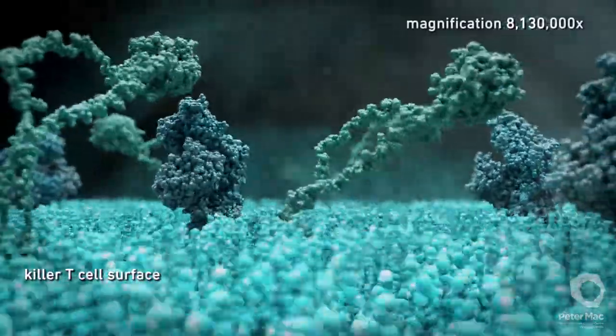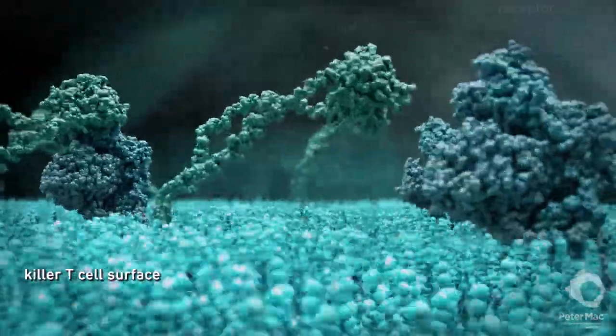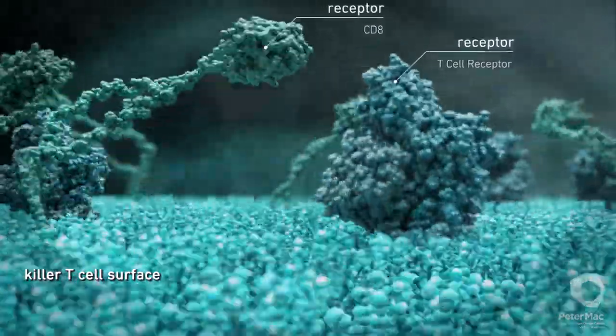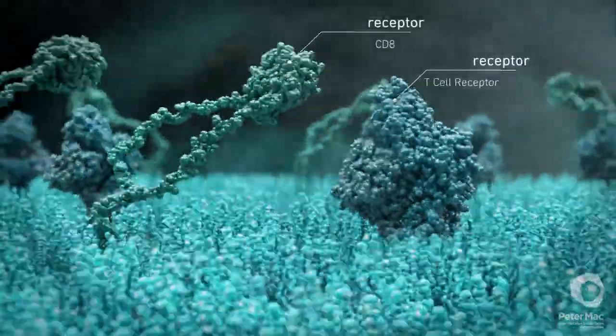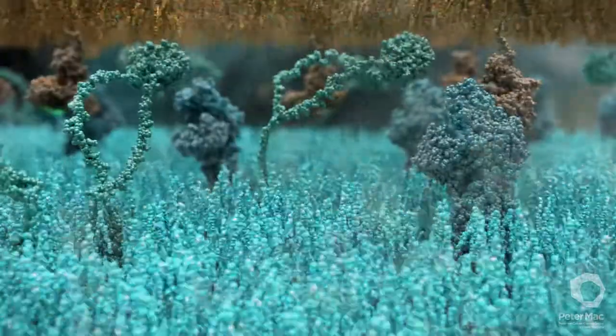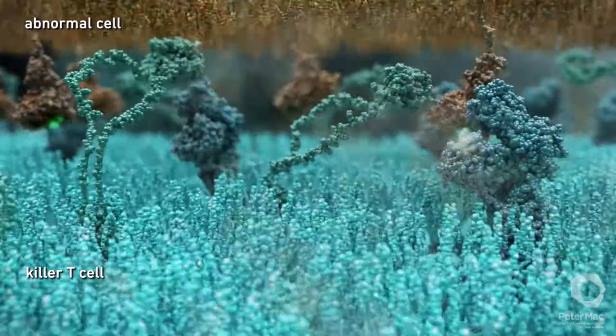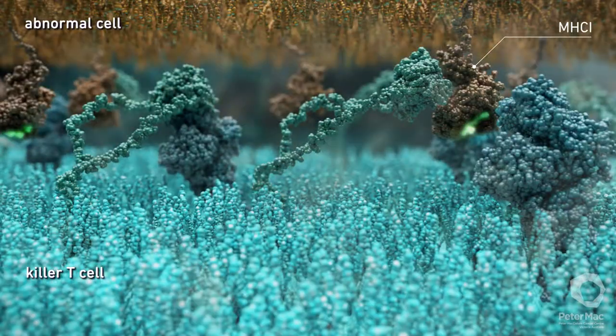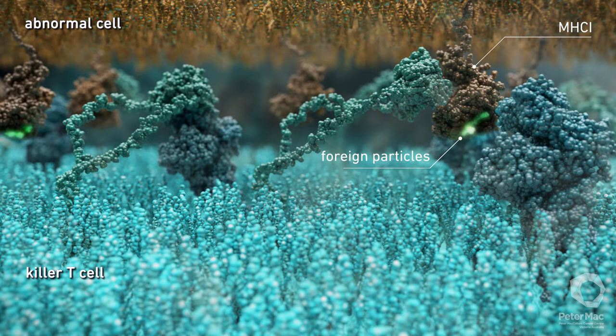We are now looking at the magnified surface of a killer T cell. These cells have special receptors on their cell surface that can recognize and latch onto foreign particles on the surface of abnormal or infected cells. Here, a molecule called MHC1 on the surface of an abnormal cell presents foreign particles that can be detected by the killer T cell receptor.